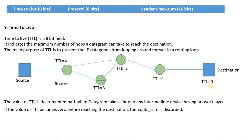TTL means that the source decides how many hops the packet can take, and this is in the form of a number which we represent in 8 bits. We need to know how many hops the packet can take because it can happen that the destination is very far and it can take time.